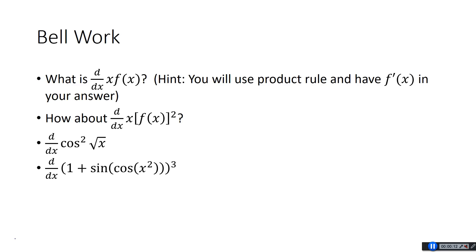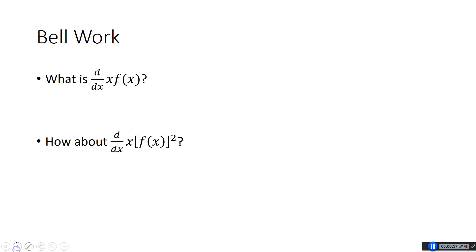We're going to start off with a little bit of a review of some of the chain rule stuff we've been working on. I want you to try some more abstract differentiation here. The first couple have an f of x in the problem, so there's going to be an f prime of x in your answer. The first one needs a product rule, the second needs product and chain rule, and the last two are chain rule review. Pause the video and try it yourself.